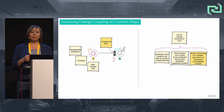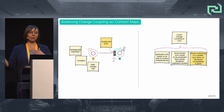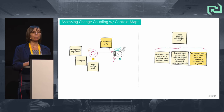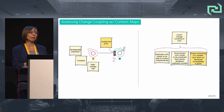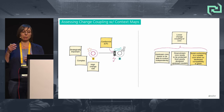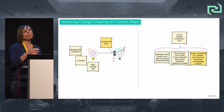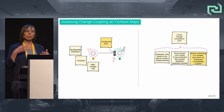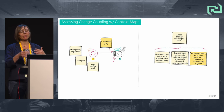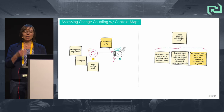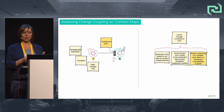We also need to avoid conforming to a volatile core when integrating with core domains when no backwards compatibility is given. The Conformist pattern adheres the downstream model to the upstream model without any transformation or translation. Conforming to a volatile upstream model like the core domain when there is no backward compatibility provided requires a lot of attention, as it's a source of constant change — so we need to avoid it when we have no backward compatibility.